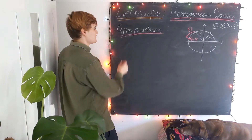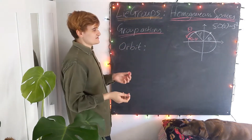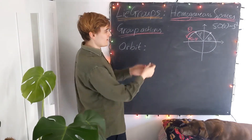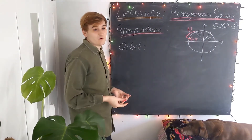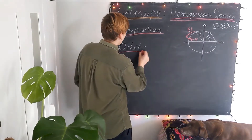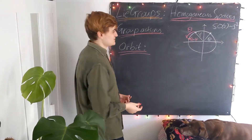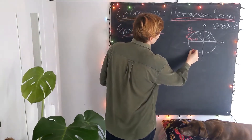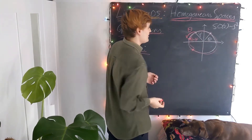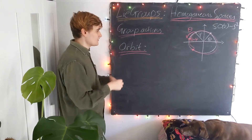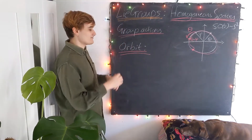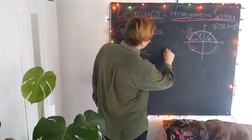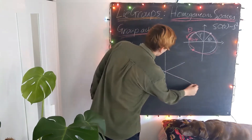If we have some Lie group, we can talk about the orbit of its group action: if we take some point and act on it with all the elements in the group, it traces out a path in the Lie group known as the orbit. For the circle this is trivial — the orbit at any point just takes us all the way around back to that same point. But this is terminology we're going to need to generalize when we talk about homogeneous spaces.